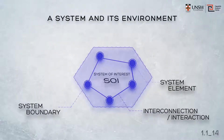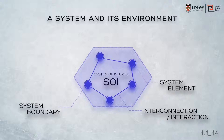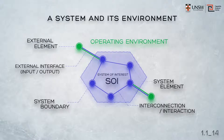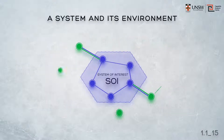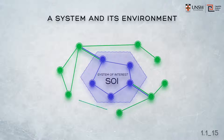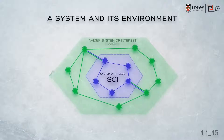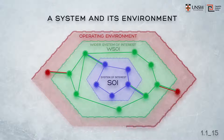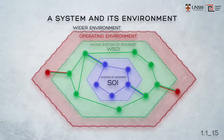Now, returning to our simple diagram of a system. Since we're interested in engineering physical systems that are open, our system of interest must accommodate external interfaces — that is, inputs and outputs — across the system boundary, connected then to external elements that exist in an external operating environment, or perhaps a related system. Sometimes we need to be aware of an even wider context. So a system of interest (SOI) might be considered as part of a wider SOI (WSOI), which exists within an operating environment, and that operating environment could be conceived to even be part of a wider environment.